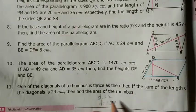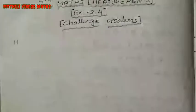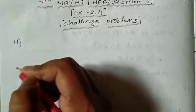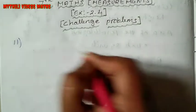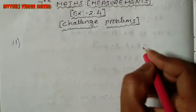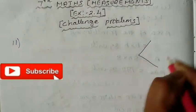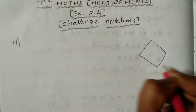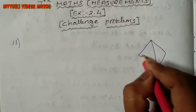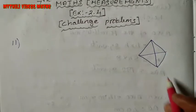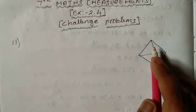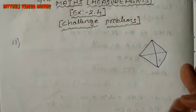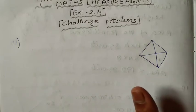This is the area of the rhombus problem. Now, let's write what is given. First, draw a rhombus. The rhombus has two diagonals. There are two formulas for the rhombus: one using the diagonals, and another using base and height.